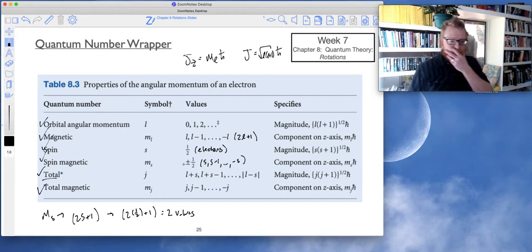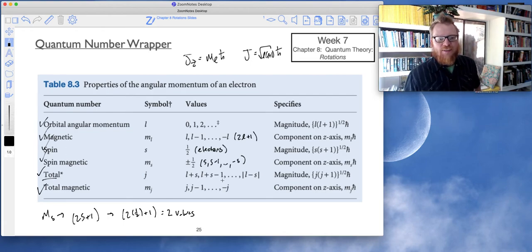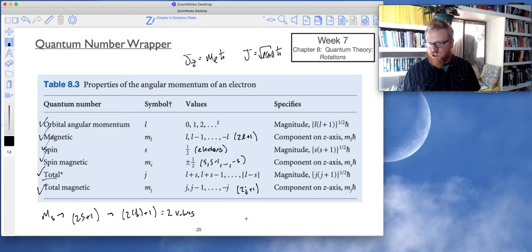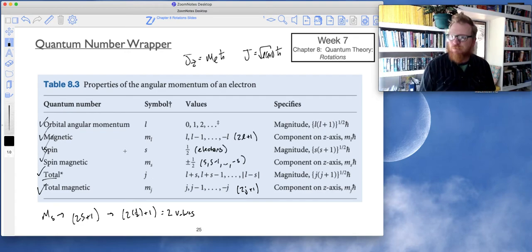Then we would see the same thing for mj. Mj will take on 2j plus 1 total degenerate values. We're going to see the use of all of these quantum numbers quite heavily in spectroscopy, so make sure that you're familiar with these. We're also going to see how principal quantum number n connects to all of these.